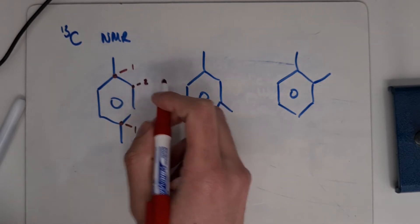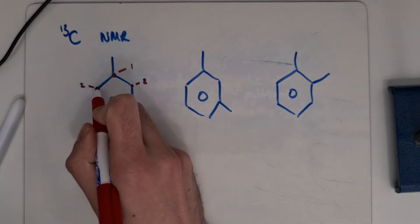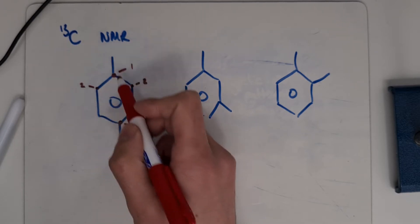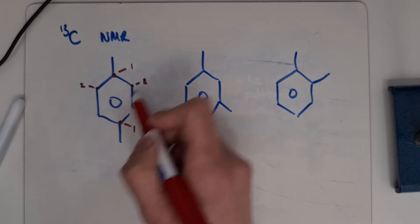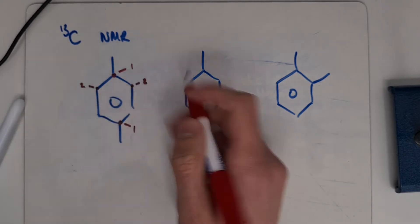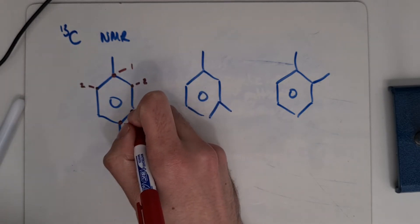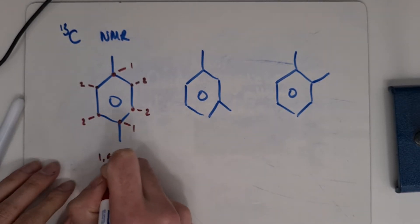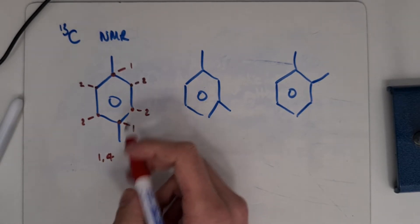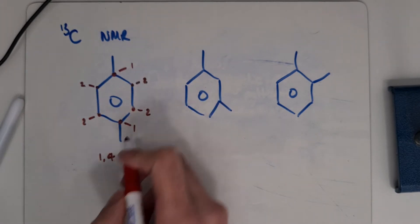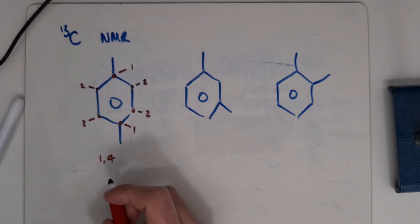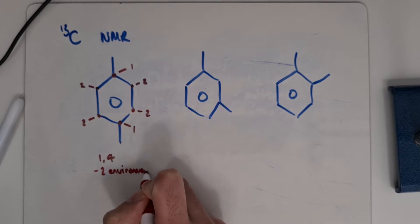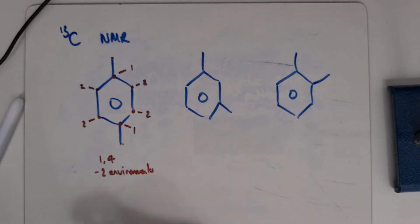Environment 2 here is identical to the environment on the other side — they're bonded to exactly the same thing. First bonded to a carbon with a CH3 on, then they both go to CH, back to a carbon with a CH3. So whichever way around you go, they're identical. In a 1,4 carbon NMR, just for the benzene ring, you'll get two environments from the carbons on the benzene ring, if the substituents are identical.